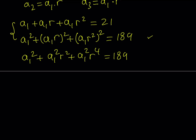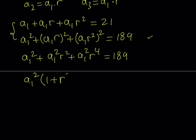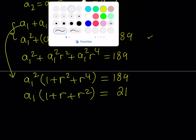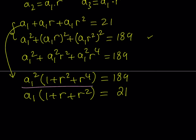Now I have two equations and two variables, so we should be able to solve this. I'll start with the second equation and factor out a_1 squared, giving a_1²·(1 + r² + r⁴) = 189. For the first equation, I factor out a_1 to get a_1·(1 + r + r²) = 21. I'd like to divide these equations side by side.